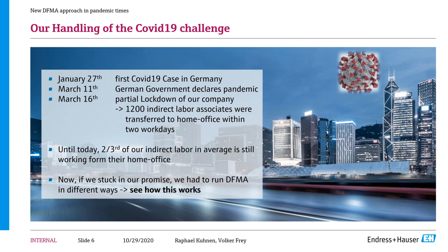In January 27th the first COVID case in Germany appeared. In March 11th the German government declared pandemic times, and March 16th we had a partial lockdown — within two days we sent 1,200 indirect labor associates to home office and had to try to keep business running with these people out in their homes.